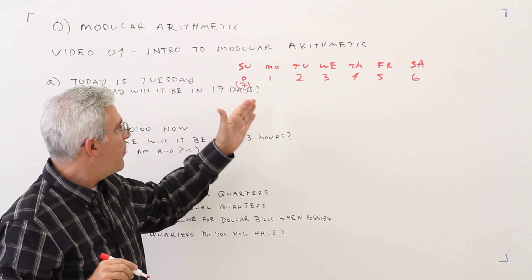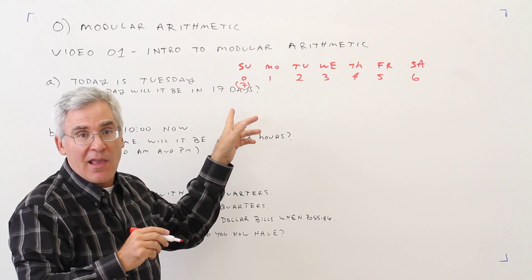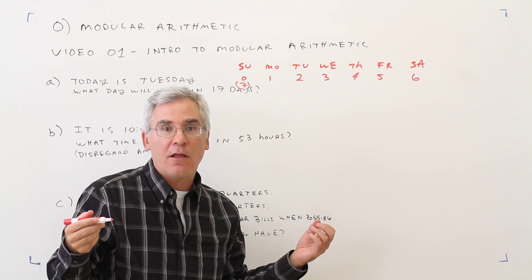And just by convention, typically we do start these cycles at 0, and then after the last one, it's the same as the next one. So you can think of Sunday as 0, 7, 14, things like that.